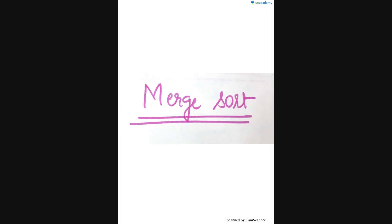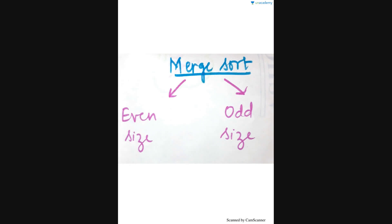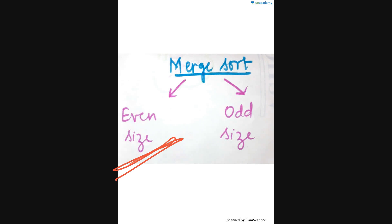Hello everyone, today I am back with merge sort for odd size. There are two parts for merge sort: even size and odd size. I completed the even size in the last video, so now I'll be going for the odd size.